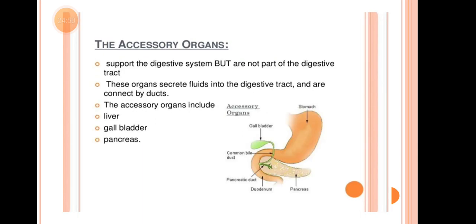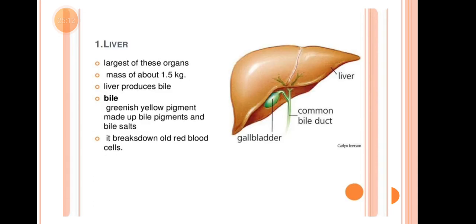Next are the Accessory Organs. They support the digestive system but are not part of the digestive tract — they are connected by ducts. The accessory organs include the Liver, Gallbladder, and Pancreas.